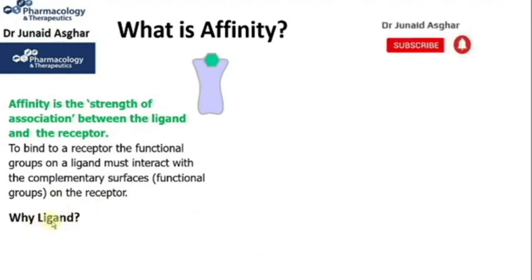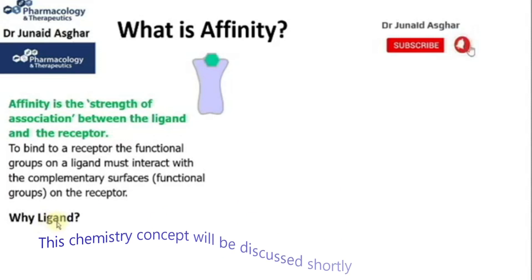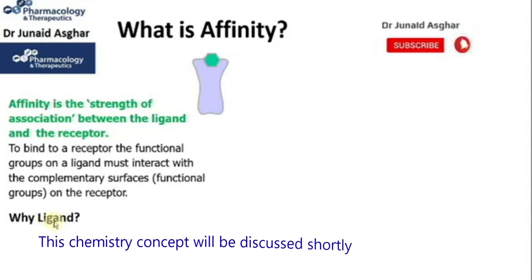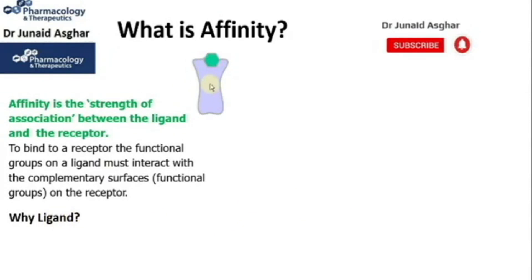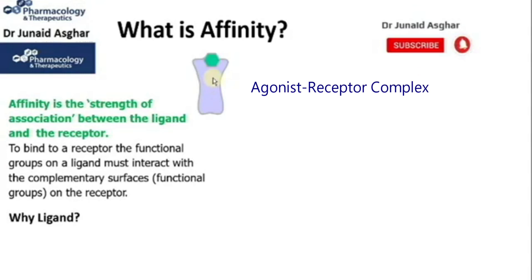The reason why we call the agonist a ligand is because of a basic chemistry concept, according to which a ligand is a molecule which possesses functional groups that bind to other species to form a complex. Here our ligand, or the agonist, has made a complex with the receptor, which we call our agonist-receptor complex.